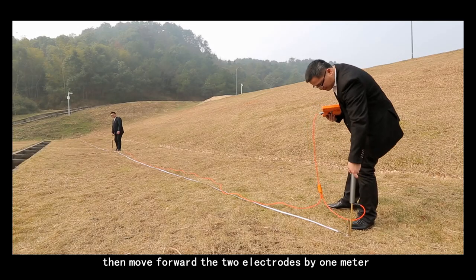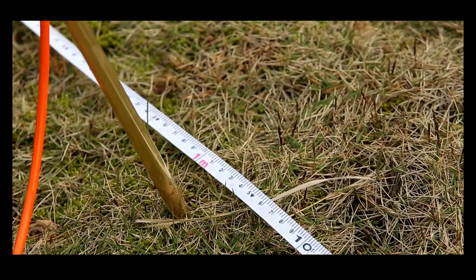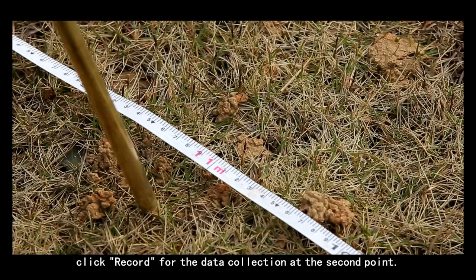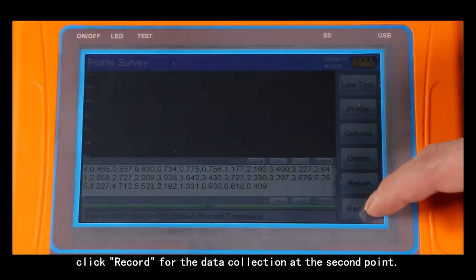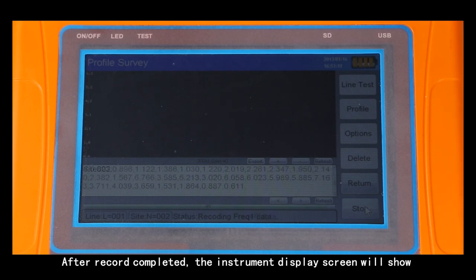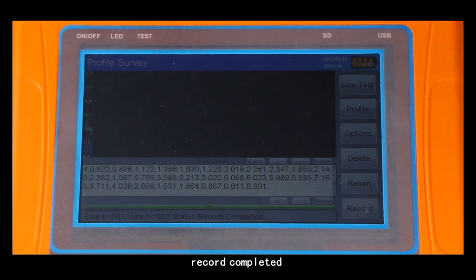Then move forward the two electrodes by 1 meter. Click record for the data collection at the second point. After record completed, the instrument display screen will show record completed.